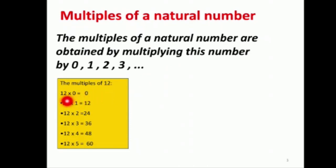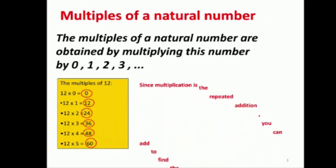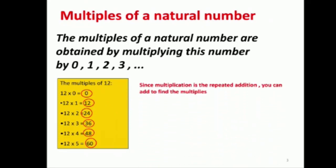يعني معناتها بدي أبلش أعمل multiplication، والملتبلز بيكونوا: zero, twelve, twenty-four, thirty-six, forty-eight, sixty. أكيد ما بتنتهوا هون، بس أنا حددت هون. أول six multiples للـ twelve.